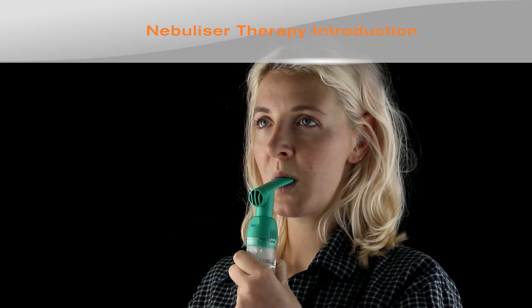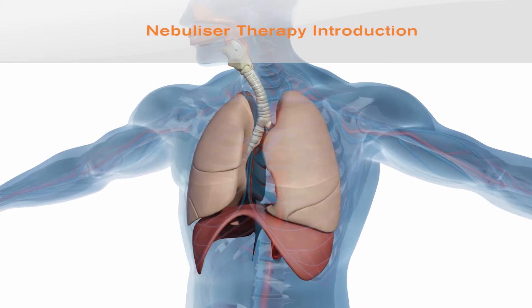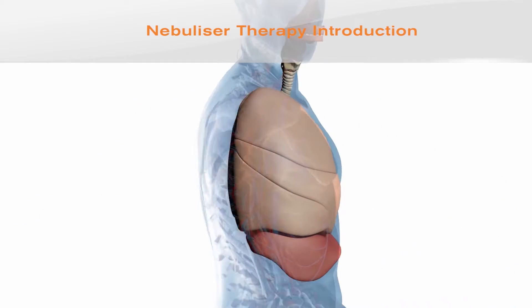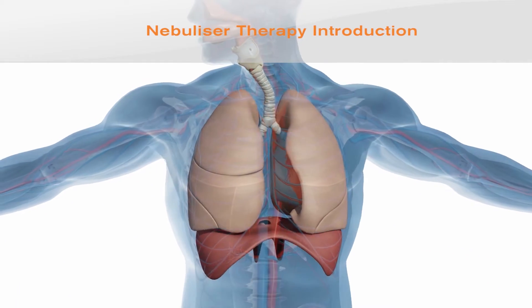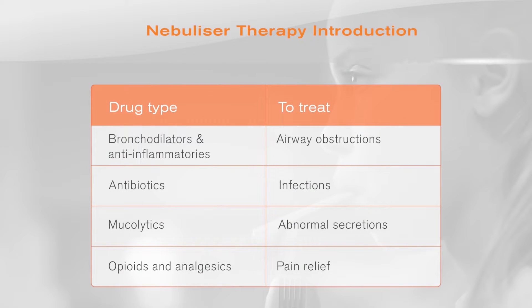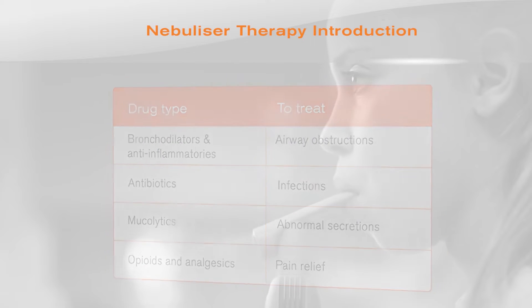Many respiratory diseases require careful nebuliser therapy to improve the day-to-day lives of sufferers. This therapy allows delivery of aerosolised respiratory drugs directly to the therapeutic site — the lungs. There are several classes of respiratory pharmaceuticals: bronchodilators and anti-inflammatories for airway obstructions, antibiotics for infections, mucolytics for abnormal secretions, and opioids and analgesics for pain relief. Nebuliser therapy can be used to deliver all these drugs to the patient.